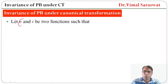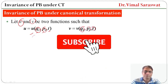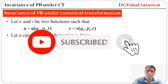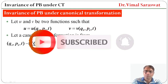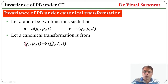Let u and v be two functions. u is the function of q_i, p_i, and t — meaning coordinate, momentum, and time — and also v is the function of q_i, p_i, and t. Let a canonical transformation be from small q_i, p_i, t to capital Q_i, capital P_i, and t. It means a canonical transformation is from old coordinate, old momentum, and time to new coordinate, new momentum, and time.